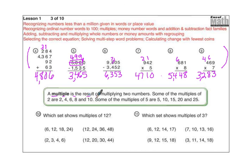A multiple is the result of multiplying two numbers. Some of the multiples of 2 are 2, 4, 6, 8, and 10. Some of the multiples of 5 are 5, 10, 15, 20, and 25. Multiples are skip counting. They're the numbers that we say when we sing our math songs. It's the numbers that you say when you do skip counting.